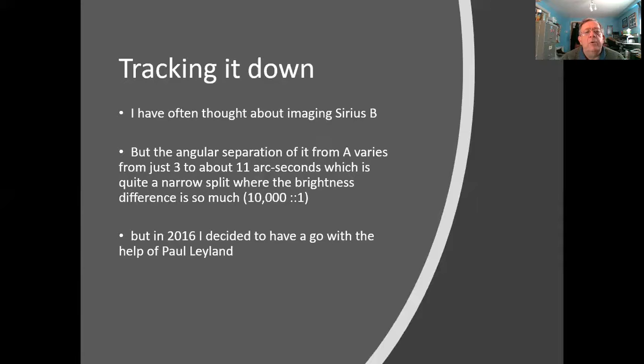The real problem is with it so close and with the 10,000 to one brightness ratio, it could be quite difficult. But a few years ago in 2016, I decided it was worth having a go. With the help of another friend from the Cambridge Astronomical Association, Paul Leyland, we used my new 14 inch reflecting telescope and a deep sky imager camera to try and do this.